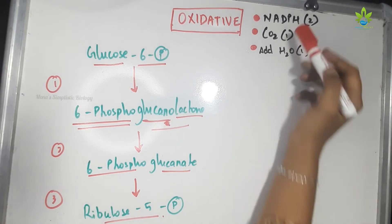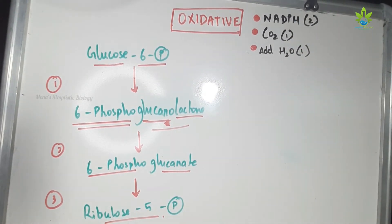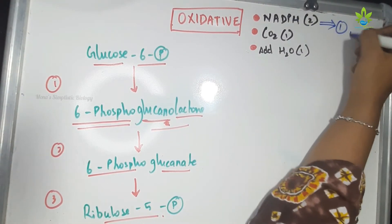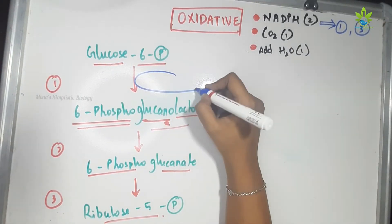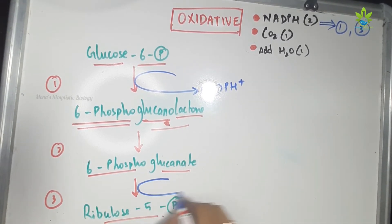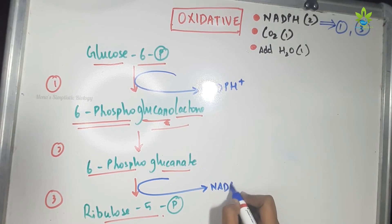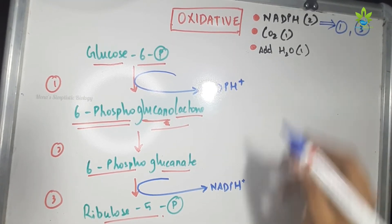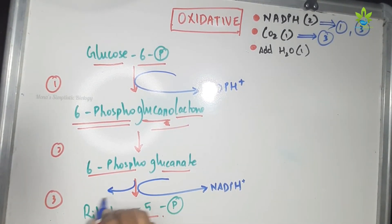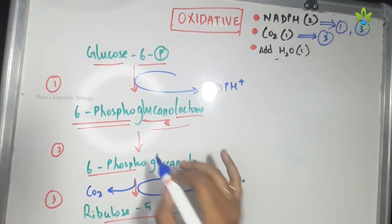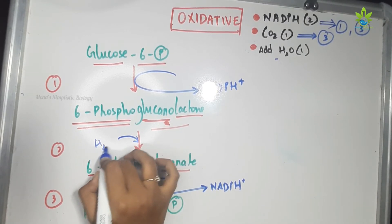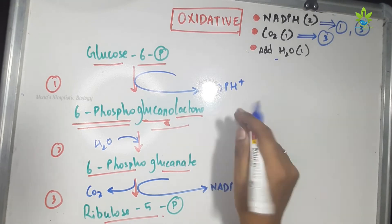Now let's look at where NADPH, CO2, and H2O come from in these three reactions. NADPH is produced in the first and third reactions. CO2 is produced in the third reaction — that is one CO2. Water is added in the second reaction. Note that NADPH and CO2 are produced, but water is added.